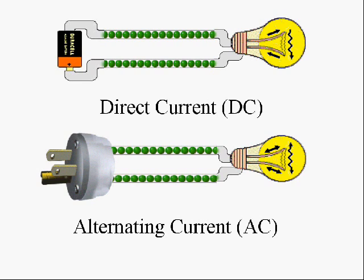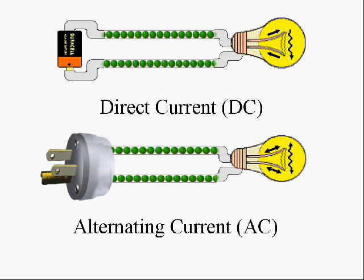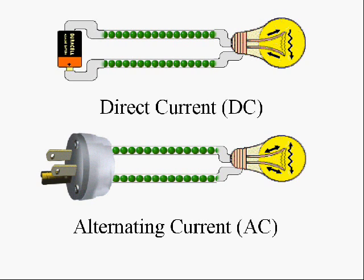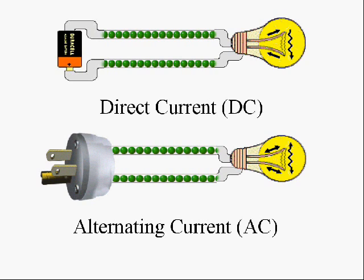So what are the ways that we can generate larger amounts of currents? We can generate both direct current and alternating current by a number of means. Direct current, as I said, flows in one direction. A battery is an example of a device that generates direct current.